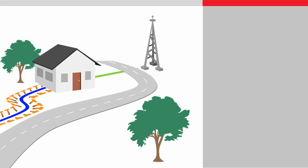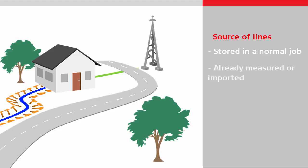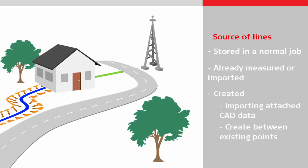Let's take a look at where our line might come from. As described in other Stake to Line videos, to be used in the Stake to Line app, the line must exist in a normal job. Either the line already exists in the job — for example it was already measured or imported — or it will need to be created, for example by importing attached CAD data, or by creating a new line using existing points.